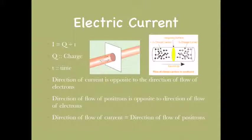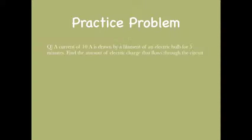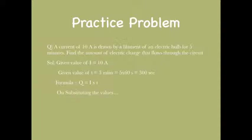Let's solve two problems on this concept. Problem 1: A current of 10 amperes is drawn from the filament of an electric bulb for 5 minutes. Find the amount of electric charge that flows. From the given question, I equals 10 amperes, and t equals 5 minutes, which is 300 seconds. Substituting the values, Q equals 10 multiplied by 300, giving 3000.